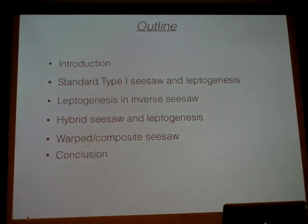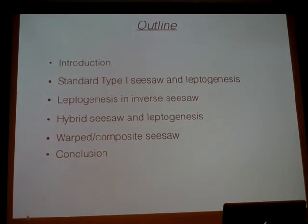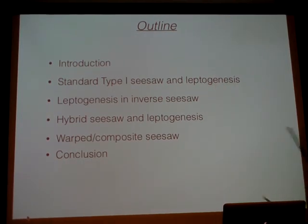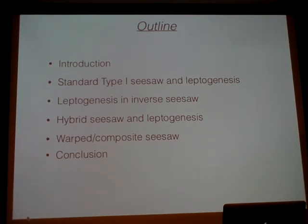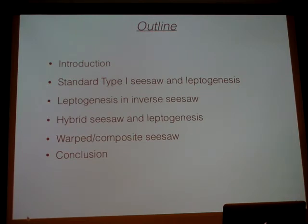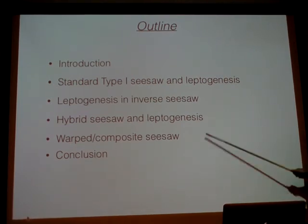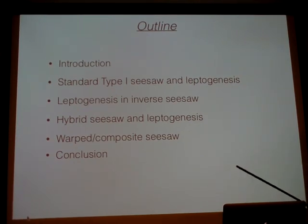Today I will introduce several seesaw models and then talk about leptogenesis in each of them. We start with a simple setup — a standard type 1 seesaw and leptogenesis in it. Then we move on to a TeV scale seesaw called inverse seesaw and study leptogenesis in it. We'll see there are some potential problems in inverse seesaw that motivate us to propose a hybrid seesaw. Later we'll discuss a more natural seesaw called warped composite seesaw, and hybrid seesaw can match to that model.